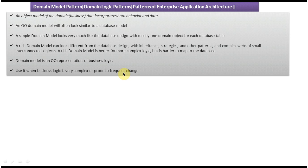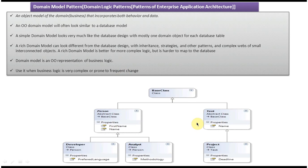Here you can see an example — a base class is extended by Person and Task. Person is extended by Developer and Analyst, and Task is extended by Project. This is one kind of domain model. Corresponding to these classes, the database will have tables like Person and Task, and those tables are represented as classes.